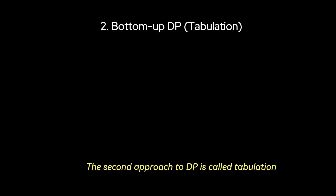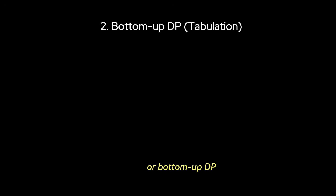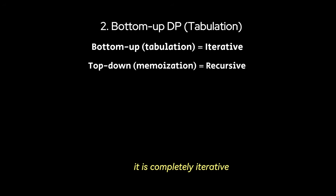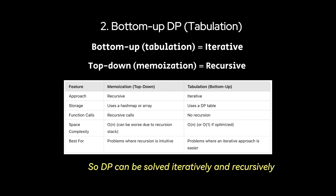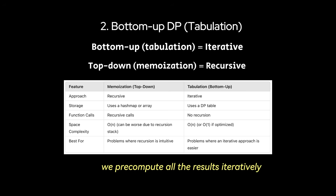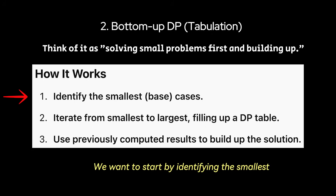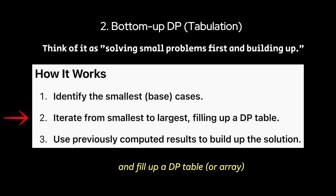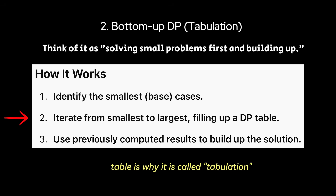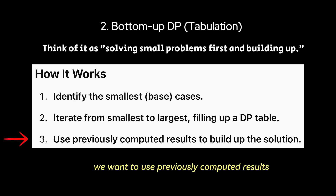The second approach to DP is called tabulation, or bottom-up DP. Tabulation doesn't use recursion — it is completely iterative. So DP can be solved both iteratively and recursively. Instead of solving subproblems on demand like memoization, we precompute all the results iteratively from the ground up. We start by identifying the smallest base cases, then iterate from smallest to largest and fill up a DP table. Filling up this DP table is why it is called tabulation. After filling up the table, we use previously computed results to build up the solution.